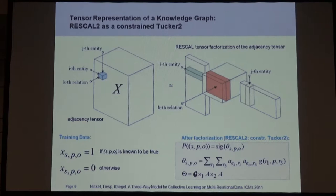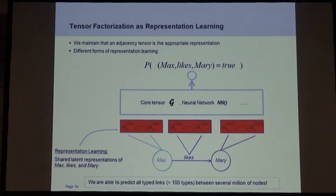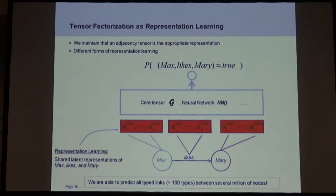After reconstruction, if a one wants to become a zero, it might be a mistake in the database. More interestingly, if a zero wants to become a one, it might be a fact that can be explained by the patterns the algorithm sees in the data. So we can do this type of inferential reasoning. We consider tensor factorization as a form of representation learning. Max has a latent representation — just a vector on the left. 'Likes' has a latent representation in the middle. Mary has a latent representation. There's a map of these latent representations to a confidence score. You can use a core tensor, or you can plug in a neural network, as other groups have done.